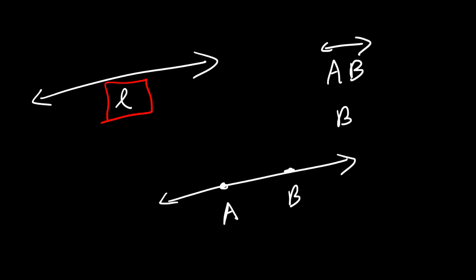So what about these two lines? How can we name it? The first line is simply called line L. That's it. Now, the second line contains two points that are highlighted. So we could say it's line AB, or line BA. So make sure you know how to name a line if you're taking a geometry course.